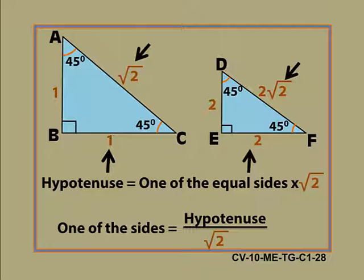Do you think we need two isosceles right angle triangles to establish these relations? No, one triangle is enough.